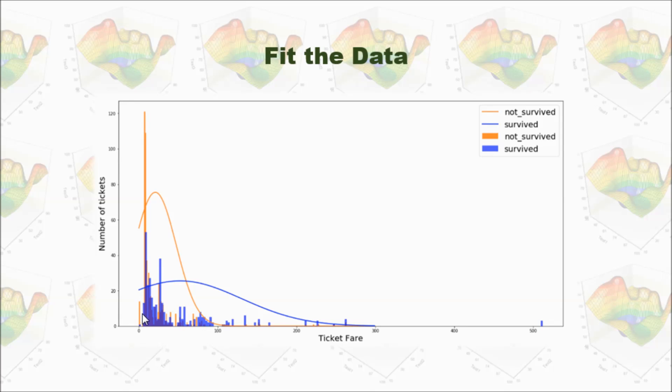We can plot all the ticket price along this x-axis and number of tickets in this y-axis. And you can see, with survived passengers, we have those data points.